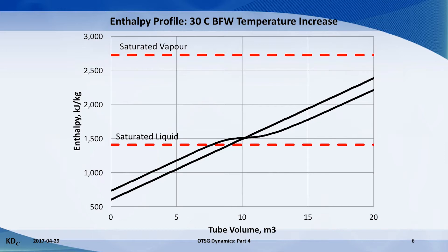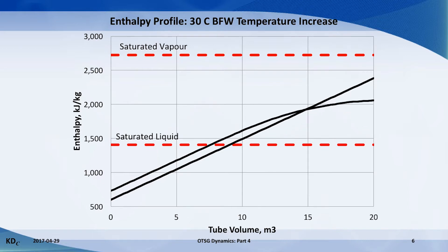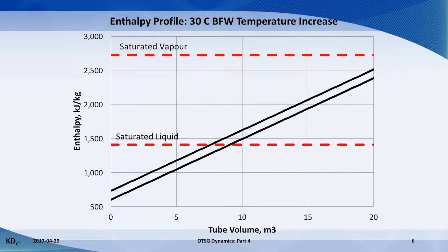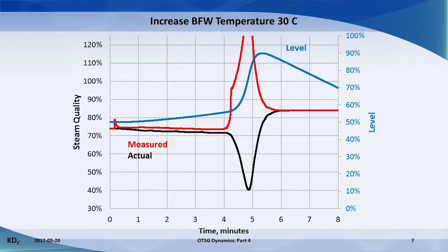The hot front pushes through the boiling point, and a slug of water is fired down the OTSG like a cannon. The outlet enthalpy quickly dips low because of the extra mass of water, and then snaps high to the expected value. The trend of actual and measured steam quality illustrates the effect of this extra mass leaving the OTSG.